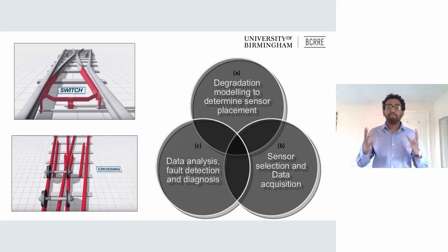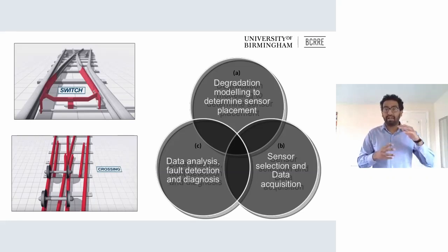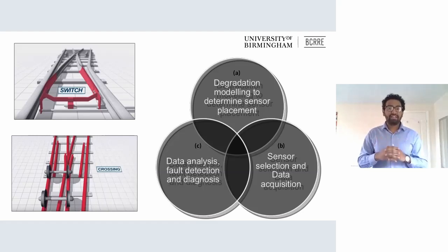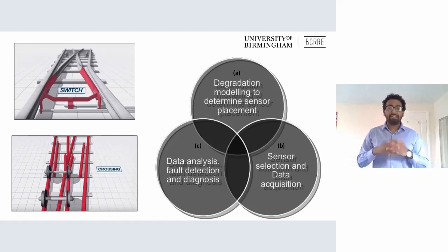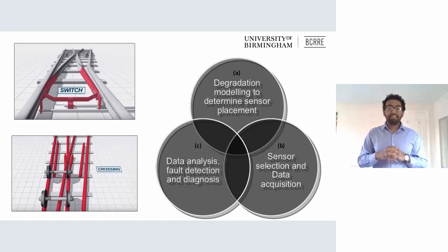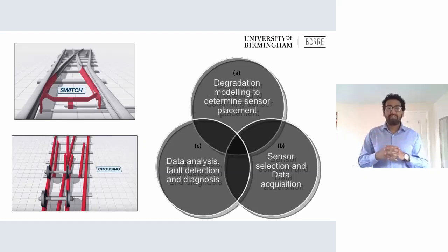The novel numerical approach that I used in order to simulate the interaction between the vehicle and the track is called the finite element method. In the finite element method, the wheel, switch and crossing, and other parts of the infrastructure are discretized — or divided — into hundreds of thousands of finite elements. Each of these elements is then analyzed individually using the different laws of physics in finite element software.